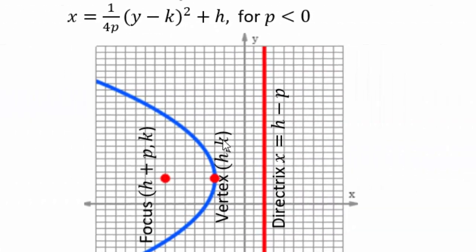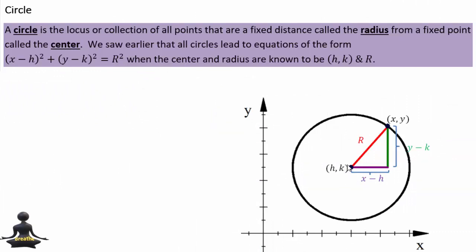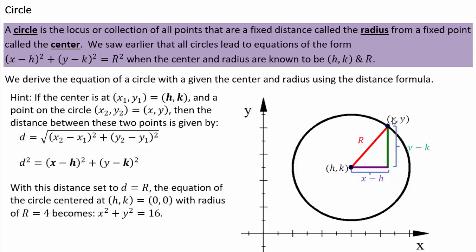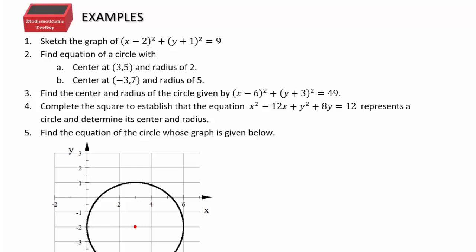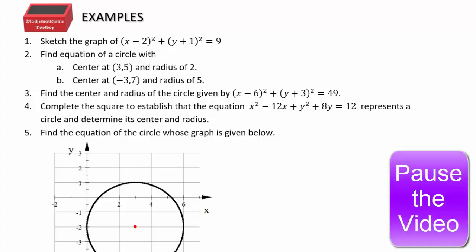A circle is a collection of all points at a fixed distance from a fixed point. The fixed point is called the center, and the fixed distance is called the radius. The algebraic equation comes from the distance formula: √[(x−h)² + (y−k)²] = r. Squaring both sides gives the standard form: (x−h)² + (y−k)² = r², where the center is (h, k) and the radius is r. Pause the video and try these five examples.